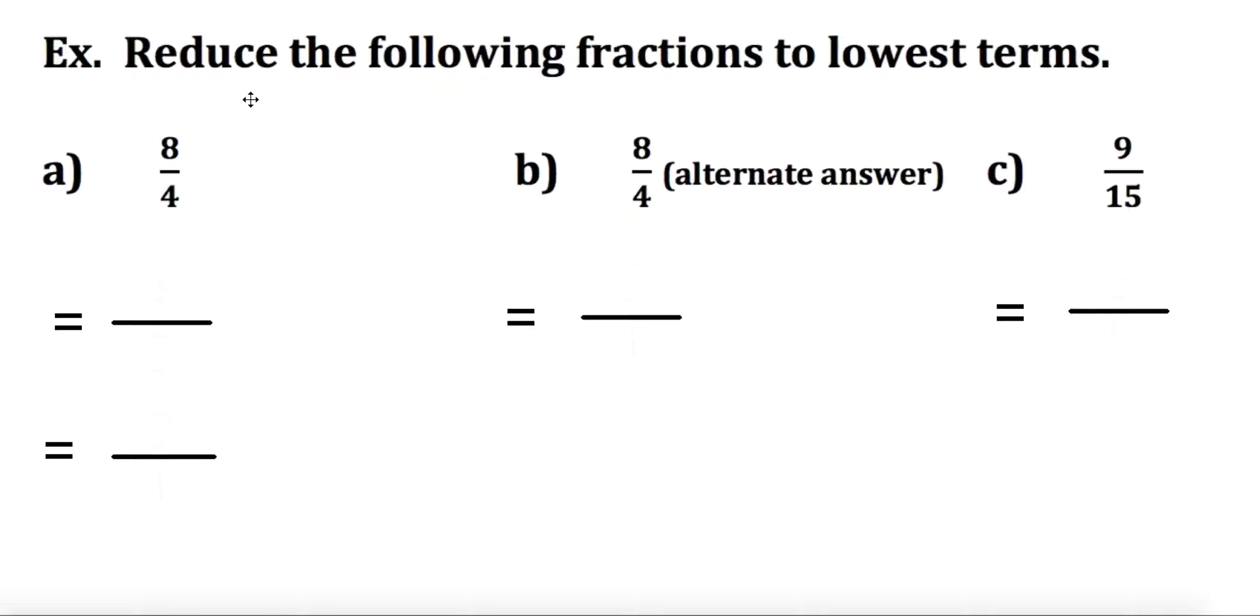So, reduce the following fractions to lowest terms. 8 over 4. We can see that both of these numbers are divisible by 2. So, if I divide the top and bottom by 2, I get 4 over 2. Now, I can keep going with this. I can actually reduce this again by 2. I can divide the top and the bottom again by 2. I get 2 over 1. An alternate way of doing this would have just been dividing both the top and bottom by 4, and I still get 2 over 1.